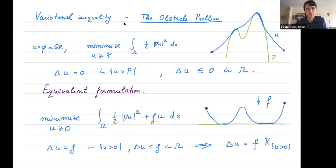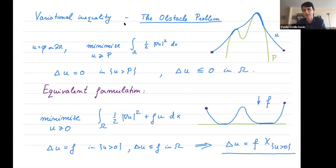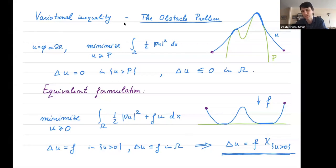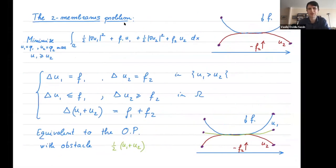Physically, one can think of the membrane under gravity sitting on a table, touching the table where u is zero and separating where u is positive. Then the Laplace of u equals f in the set where u is strictly positive, and globally the Laplace of u is less than or equal to f. This can be written compactly as: Laplace of u equals f times the characteristic function of {u > 0}. This formulation implies that u touches zero at zero angle, with zero derivative.